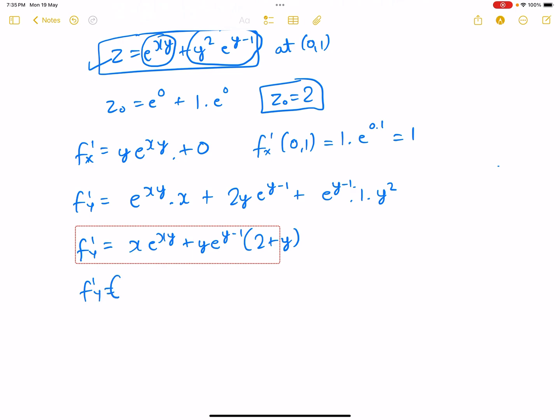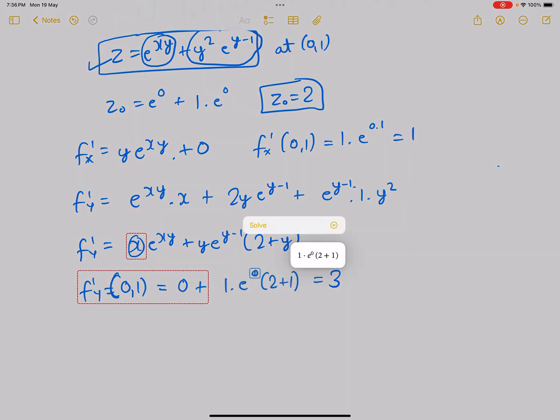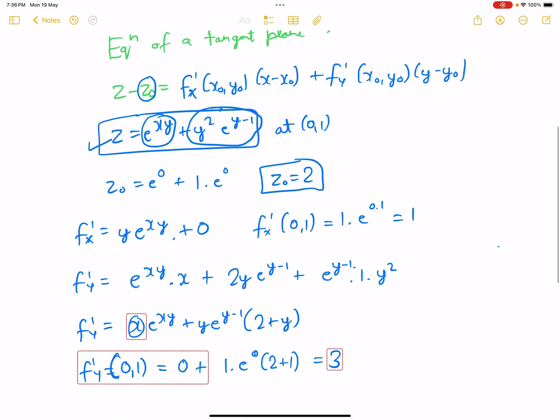And f'ᵧ at (0,1) - this would become 0 plus 1 into e to the power 0 times (2 plus 1). This value is coming out to be 3.